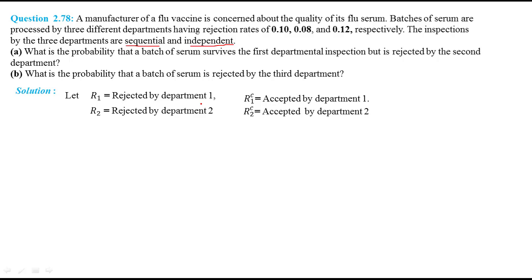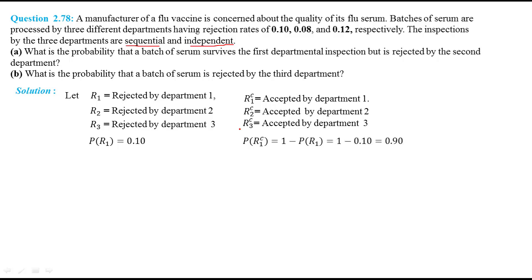Similarly, R3 is rejected by department 3 and R3 complement is accepted by department 3. The probability of R1 is 0.10, so probability of R1 complement equals 1 minus 0.10, which is 0.9. Similarly, we can find the probability of R2, probability of R2 complement, probability of R3, and probability of R3 complement.